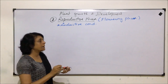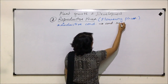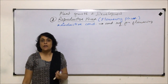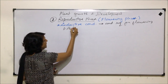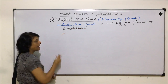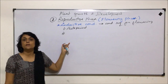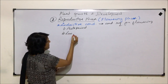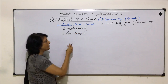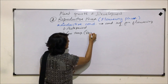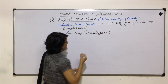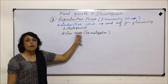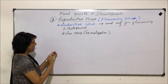Inductive conditions are those which are essential for flowering to take place. In this, there are two main things which are essential: one is photoperiod and second is temperature. Here we are not talking about optimum temperature required for enzymatic activity; we are talking about low temperature, which is known as vernalization. So there is a requirement of low temperature, and this requirement of the plant to produce flowers is known as vernalization.